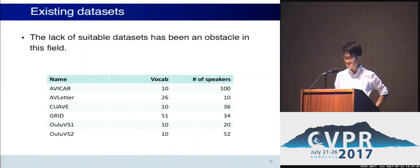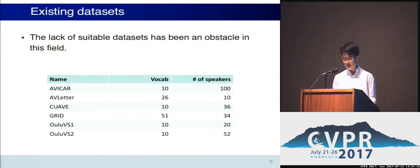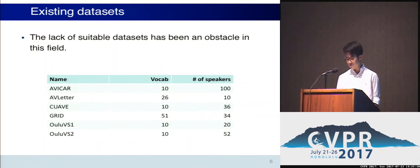One of the reasons that nobody's been able to lip read natural sentences is because there haven't been any suitable datasets. All of the existing datasets are restricted to small vocabulary and a small number of speakers. So to train a model that can generalize, we need to build a new dataset that is orders of magnitude larger, both in terms of vocabulary size and number of speakers.